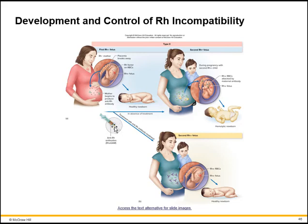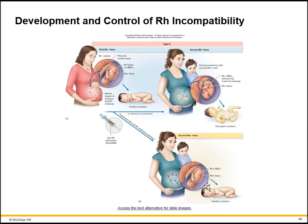To prevent this we use anti-Rh antibodies — the RhoGAM shot. RhoGAM stands for Rh for the Rh factor and GAM for gamma globulin. If the mother gets these shots in the third trimester and right after the baby is born, it desensitizes her so she won't produce Rh antibodies and won't develop immunological memory. Even if the mother's and baby's blood mix, the RhoGAM antibodies neutralize the antigen and stop an immune response. As long as the shots are given during the third trimester and right after birth, subsequent babies will be born healthy.